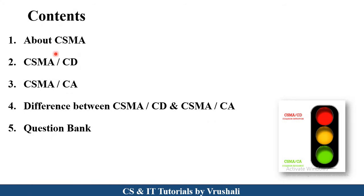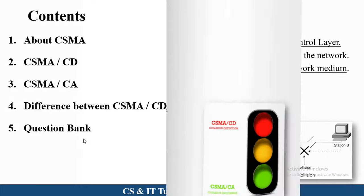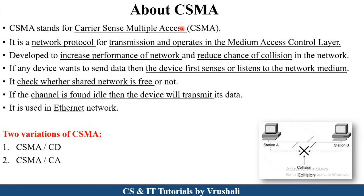Here we will discuss the types of CSMA protocol, their working, and the difference between them. At the end, we will discuss a question bank. The first point is what exactly is CSMA. CSMA stands for Carrier Sense Multiple Access protocol. This protocol works in the Medium Access Control layer or Data Link layer of the OSI model.